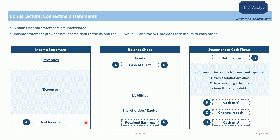Now we are going to focus on letter B: cash. The cash at the end of a financial year can be found in the balance sheet under the current assets section. This is linked to the statement of cash flows because when we calculate the change in cash over a given financial period, we need the cash at the end of the previous financial period.